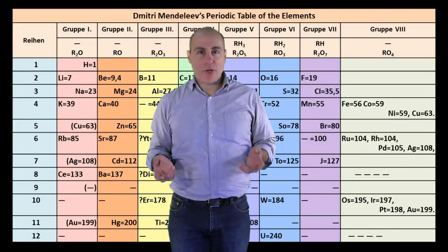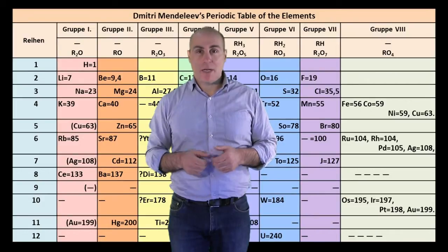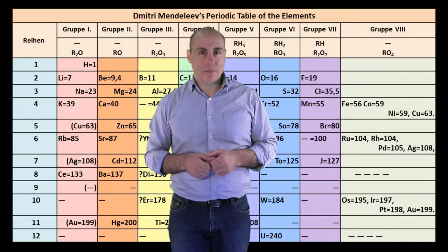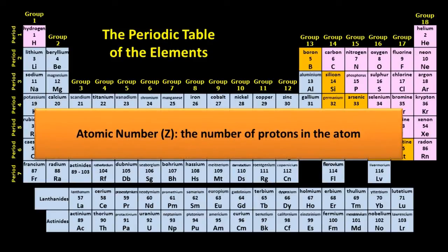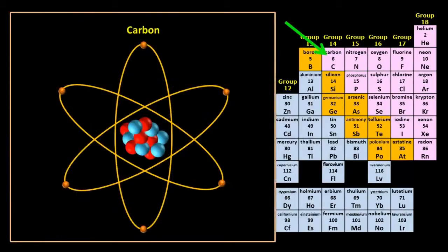Mendeleev based his periodic table on the relative atomic weights of the elements — that is, how heavy each atom is compared to hydrogen. However, our modern periodic table organises the elements according to atomic number, which is the number of protons in each atom. This produces a much better set of patterns in the physical and chemical properties of the elements. Carbon has an atomic number of six, so every carbon atom in the universe has six protons in its nucleus.